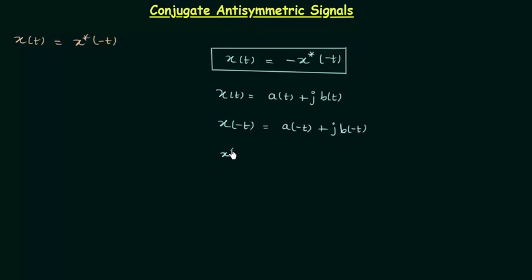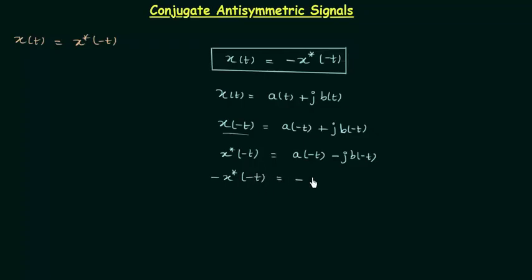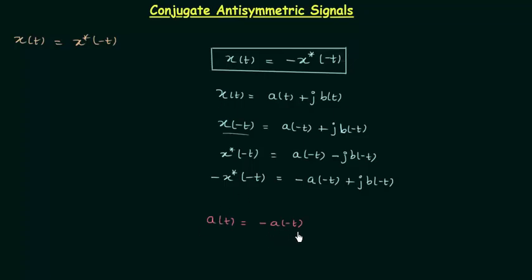After this we will find the complex conjugate of x(−t), which gives us a(−t) − jb(−t). Then we apply amplitude reversal since we have −x*(−t), giving us −a(−t) + jb(−t). From this condition, the real part of x(t) equals the real part of −x*(−t), so a(t) = −a(−t).